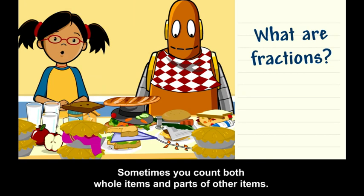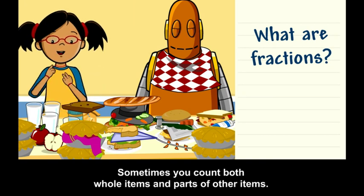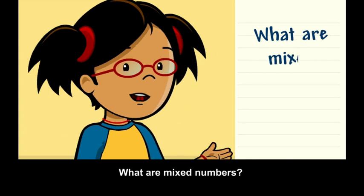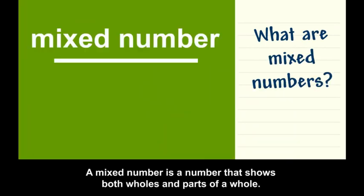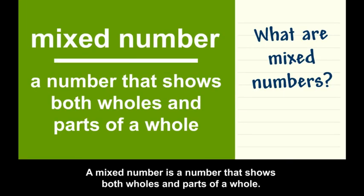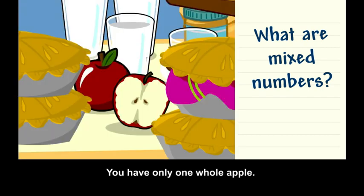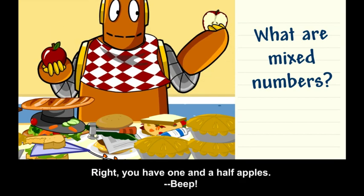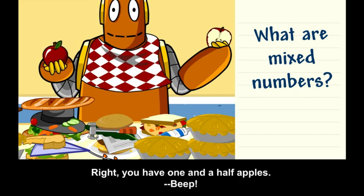Sometimes you count both whole items and parts of other items. A mixed number is a number that shows both wholes and parts of a whole. You have only one whole apple, but you also have half an apple. Right. You have one and a half apples.